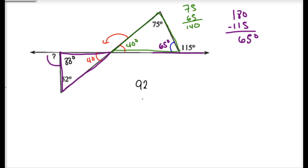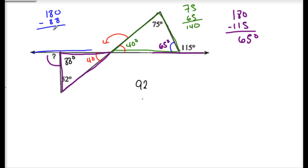Almost there — now I want the exterior angle of this triangle. This is a straight angle, so I take 180 minus 88, and I get 92 degrees.